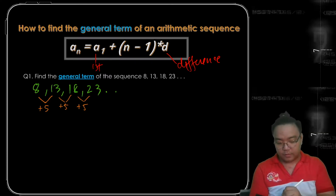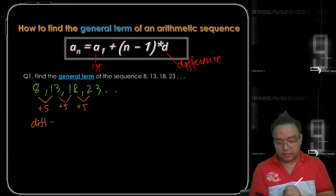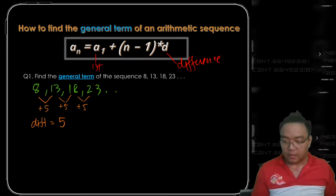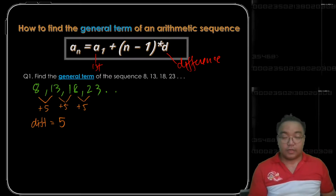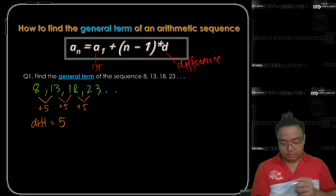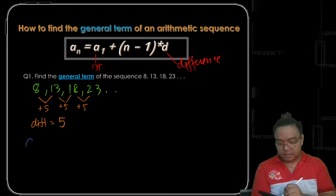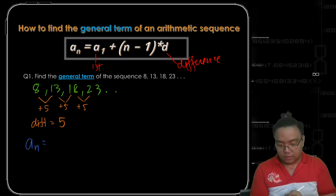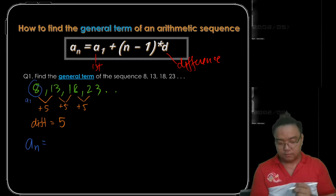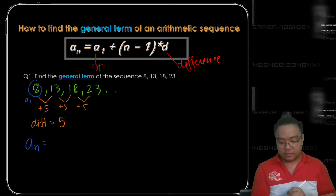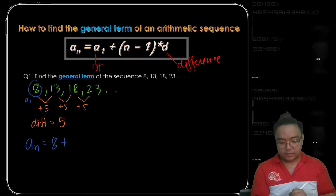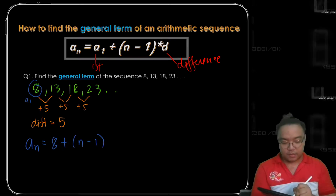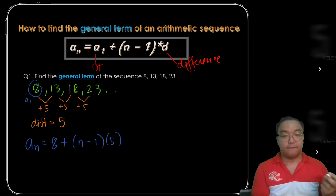Since each value has a difference of positive 5, we can now say that our common difference is 5. So to write our expression: a sub n is equal to the first term a sub 1, which is 8, plus (n minus 1) times the common difference of 5.